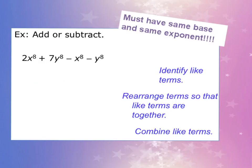Here's our second example: add or subtract 2x^8 + 7y^8 - x^8 - y^8. Remember, they must have the same base and the same exponent.